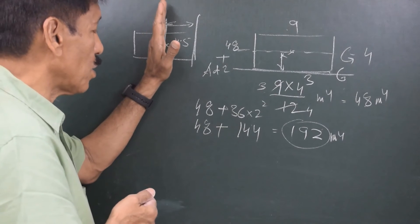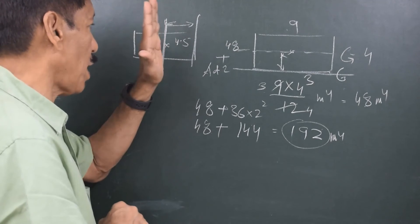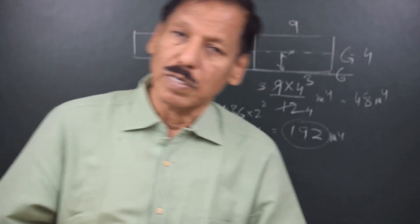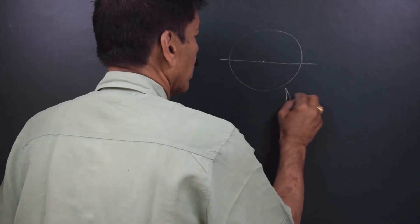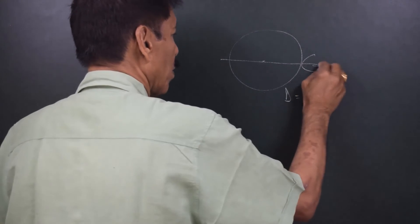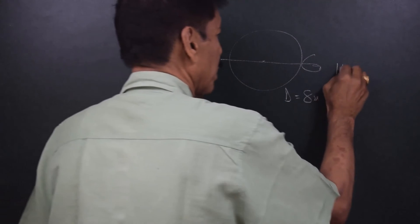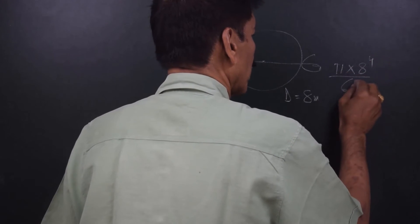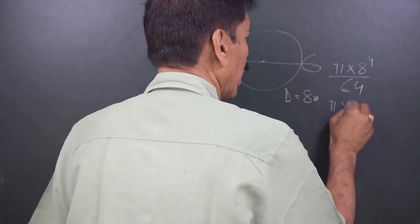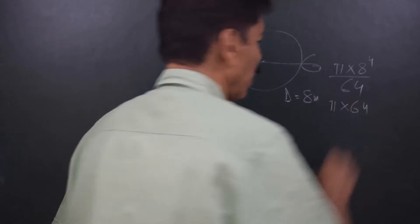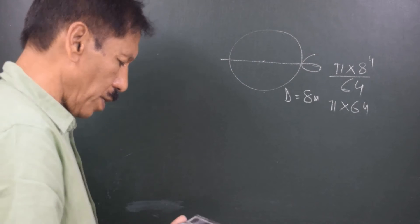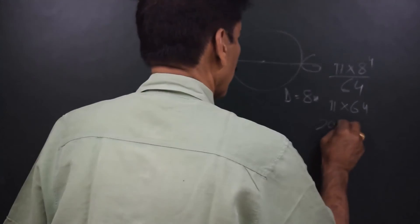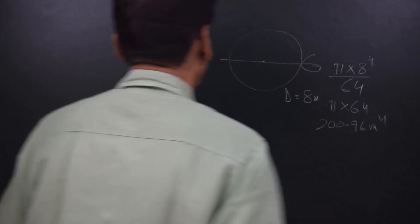If we consider the direction this way, the minimum moment of inertia is about the centroid, and as you move away from the centroid, the moment of inertia increases. For the circle example, suppose D = 8 meters. The moment of inertia about this axis would be πD⁴/64 = π × 8⁴/64 = π × 64 ≈ 200.96 m⁴.